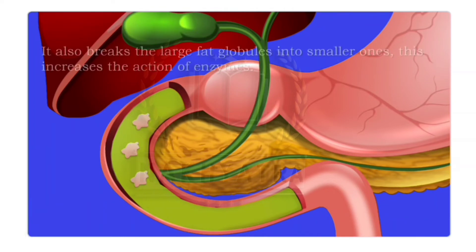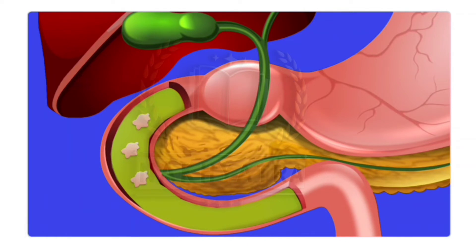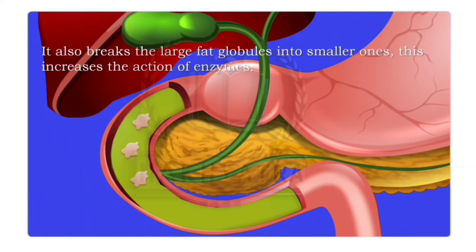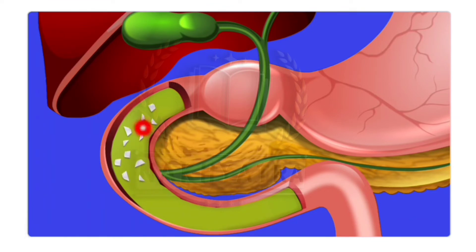Bile also breaks down the large fat globules into smaller ones, which increases the action of enzymes. This process is called emulsification of fats. So emulsification of fats is the breakdown of large fat globules into smaller particles, which increases enzyme action.